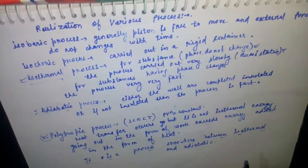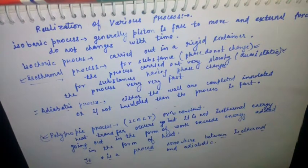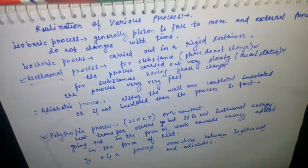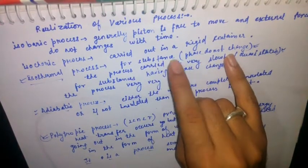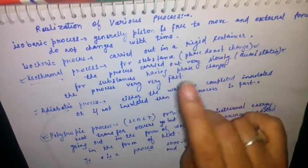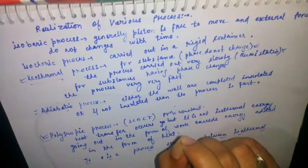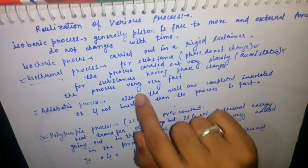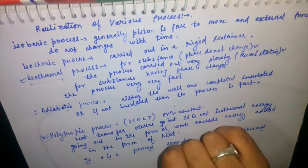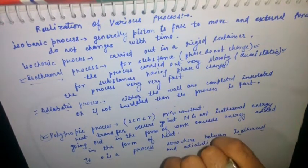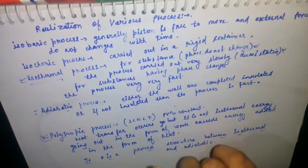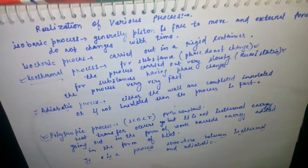To summarize all the points: the isobaric process is determined when the piston is free to move and external forces are constant. The isochoric process occurs when the process is carried out in a rigid container. For the isothermal process, there are two ways: for substances whose phase does not change, the process is extremely slow; for substances whose phase changes, the process is very fast. For the adiabatic process, either the walls are insulated, or if not insulated, the process is fast.